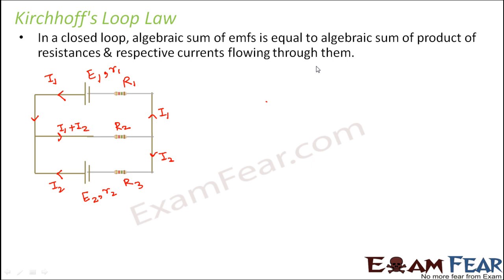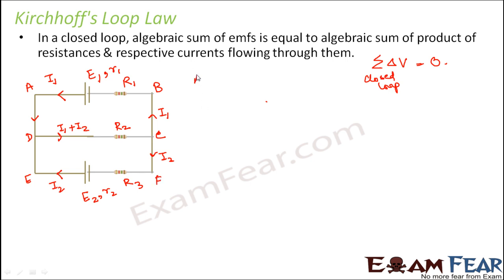As per Kirchhoff's Loop Law, the sum of ΔV in a closed loop is equal to zero. In this example you have three closed loops. Let us name the nodes A, B, C, D, E, F. The three closed loops are: A-B-C-D-A, A-B-F-E-A, and D-C-F-E-D.